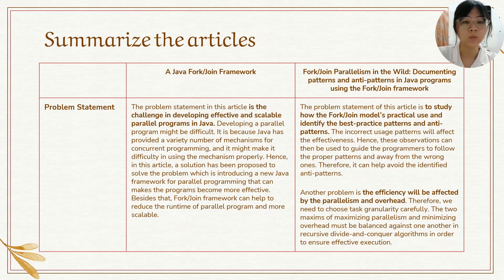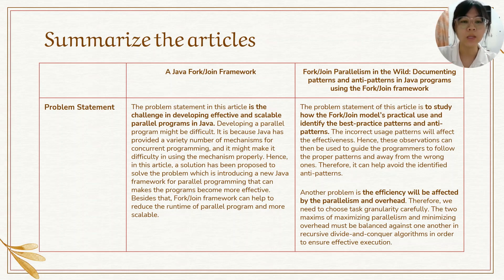For the second article, the problem statement is to study the Fork/Join model's practical use and identify best practice patterns and anti-patterns. Incorrect usage patterns will affect effectiveness. Hence, this observation can be used to guide programmers to follow the proper patterns and avoid the wrong ones, helping to avoid identified anti-patterns. Another problem is that efficiency will be affected by parallelism and overhead. Therefore, we need to choose the task granularity carefully. The two methods of maximizing parallelism and minimizing overhead must be balanced against one another in the recursive divide and conquer algorithm in order to ensure effective execution.